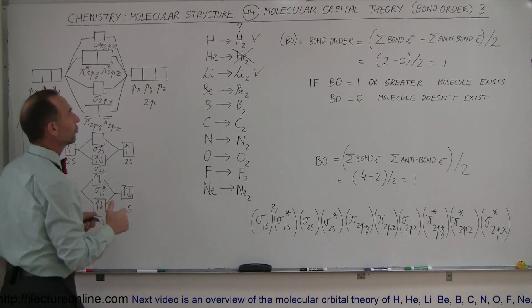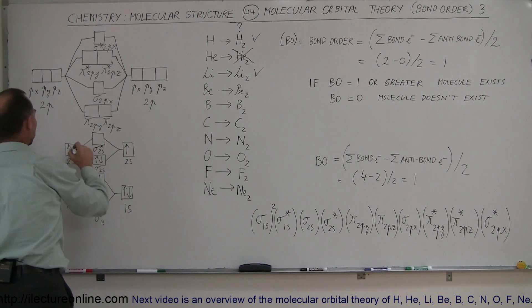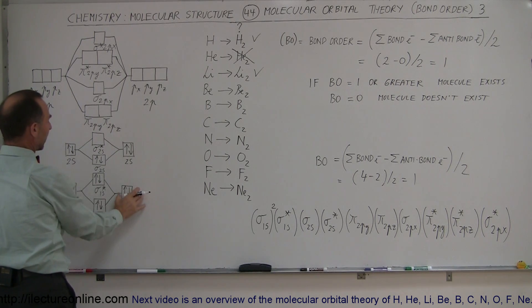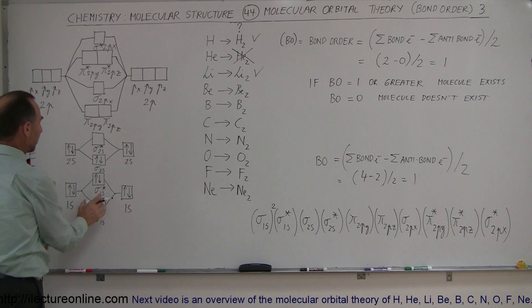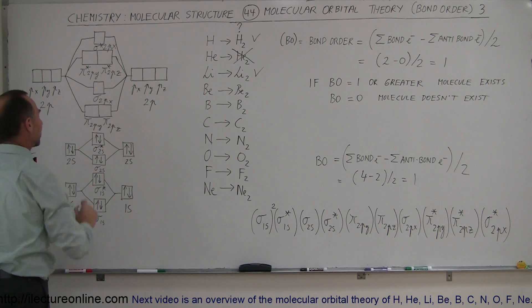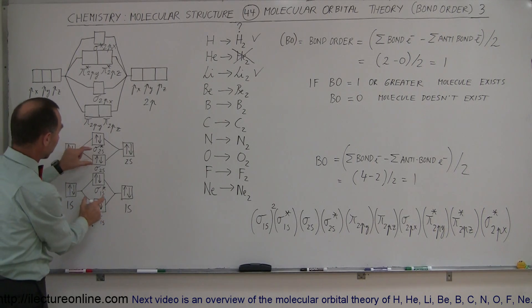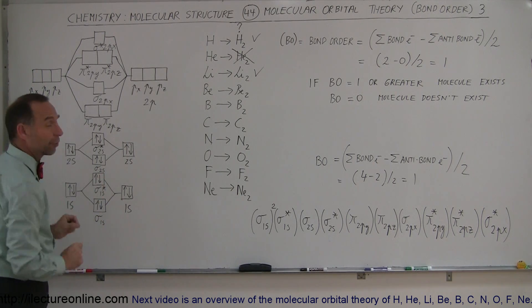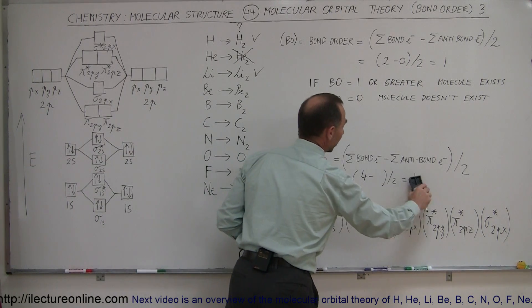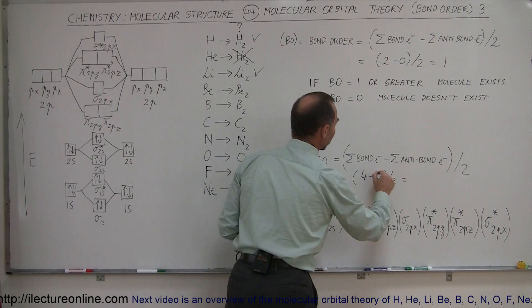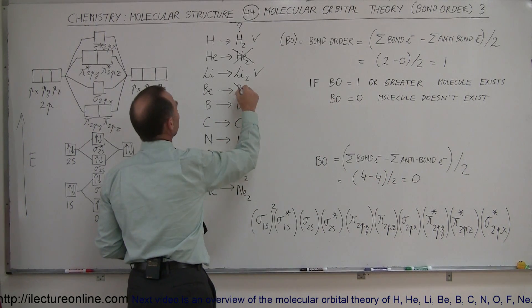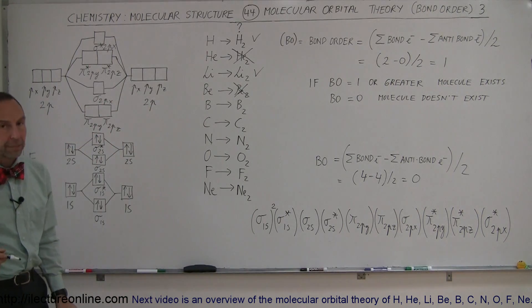Next element: beryllium. Beryllium has an additional electron in the 2s orbital, so each beryllium atom brings in four electrons. That means the last two end up going into the sigma 2s anti-bond. The electrons forming bonds equal four, the electrons forming anti-bonds equal four — equal numbers — so we would not expect that molecule to exist. Bond order equation: four minus four divided by two equals zero. We do not expect to see a Be2 molecule.